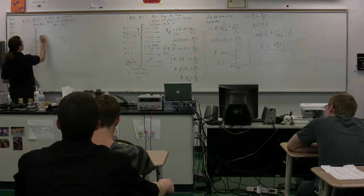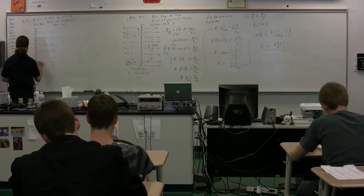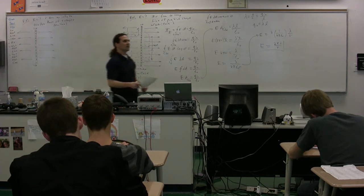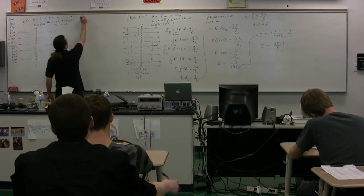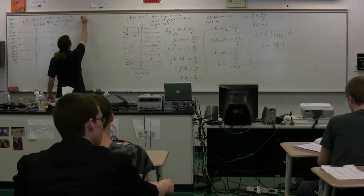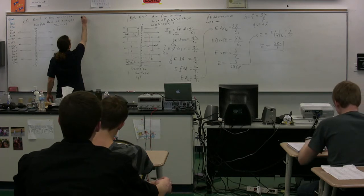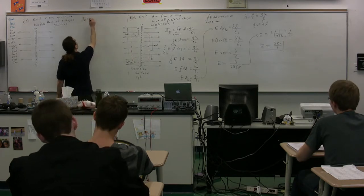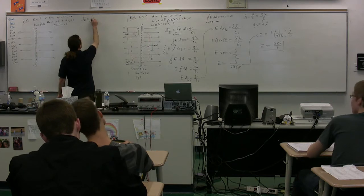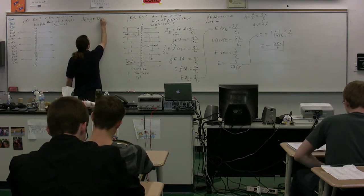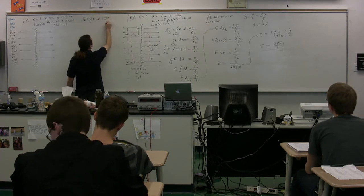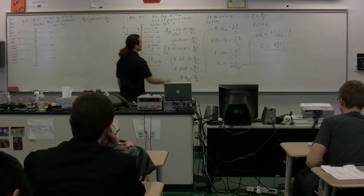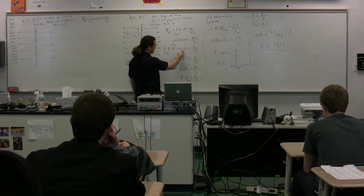We can tell here again that the electric field is going to look something like this. We are going to use Gauss's law. We need to pick our Gaussian surface such that the angle is either 0 or 90 degrees and the electric field is constant throughout.